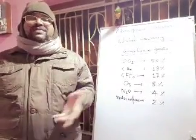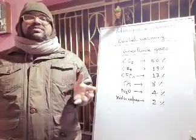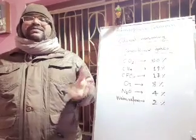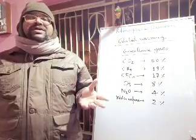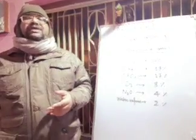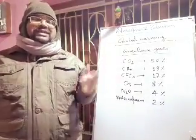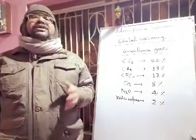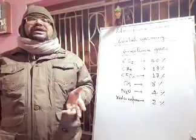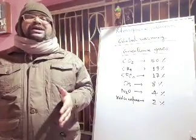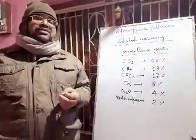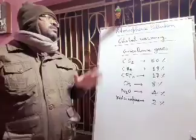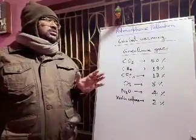Replace ordinary bulbs, which give more heat to the atmosphere, with CFL bulbs or LED bulbs. Switch off vehicles at traffic signals. Use solar energy — solar systems for lighting and heating, solar cookers. You can use biogas cookers. Reduce the use of air conditioners, from which chlorofluorocarbons (CFCs) are released. In this way, today I have completed the topic of global warming. Thank you for watching.